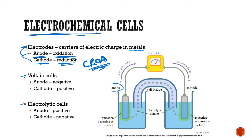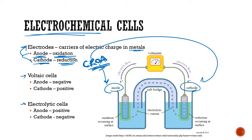This is the anode — this is where oxidation is occurring. This is the cathode — this is where reduction is occurring.